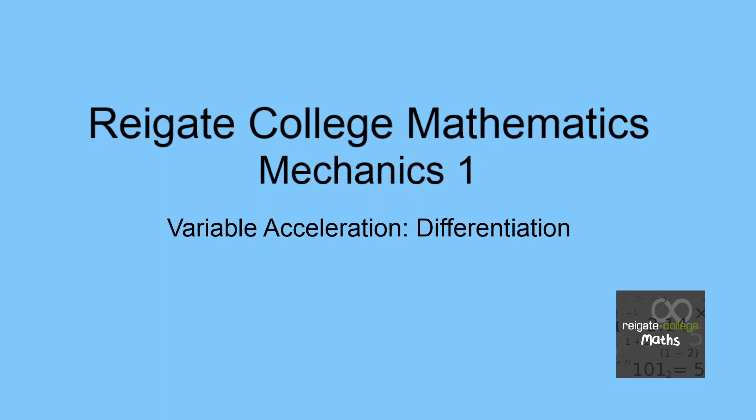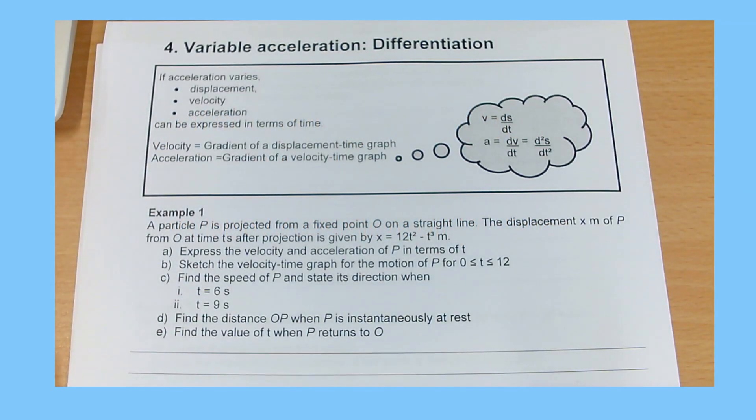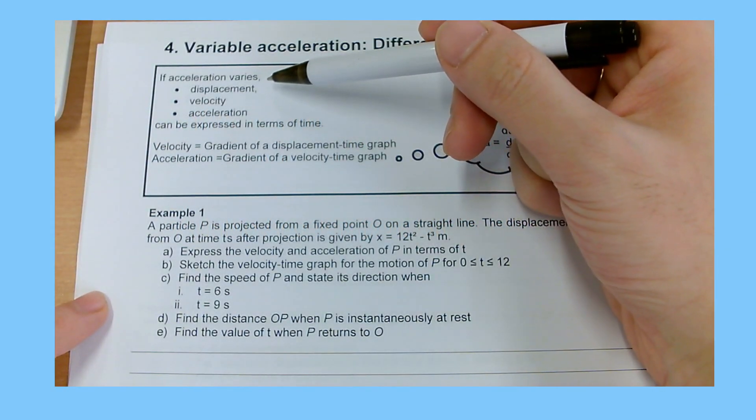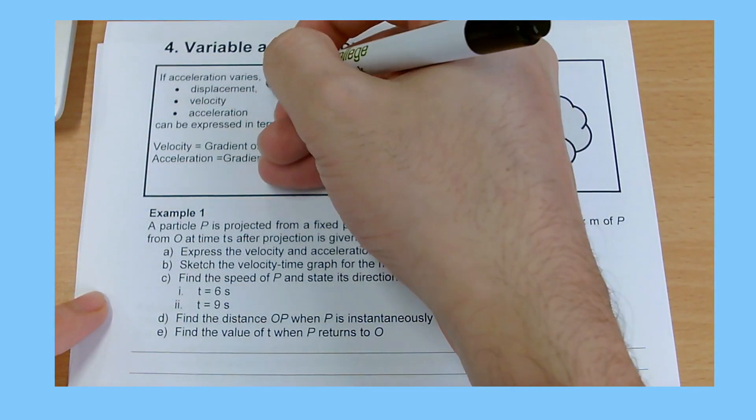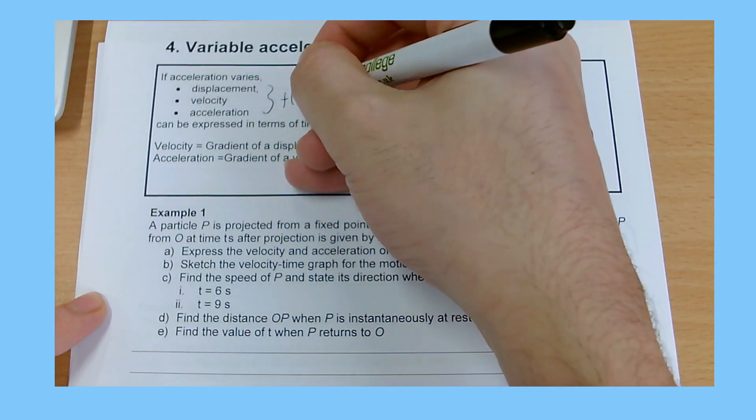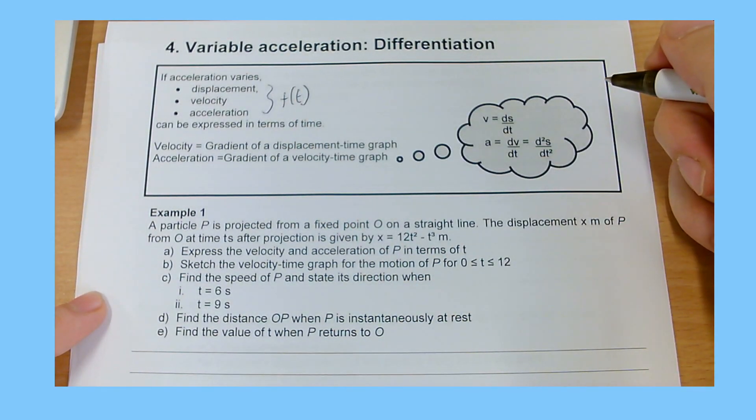Welcome to this first video looking at variable acceleration. We'll be using concepts from Pure 1 differentiation to help us analyse contexts where acceleration is not constant — where we would normally have used SUVAT — and where acceleration is varying with time. Displacement, velocity, and acceleration can be expressed as functions of time.